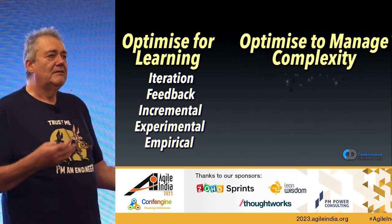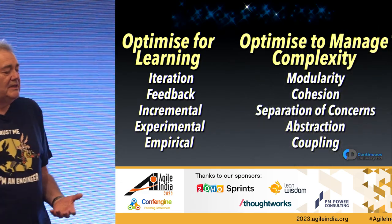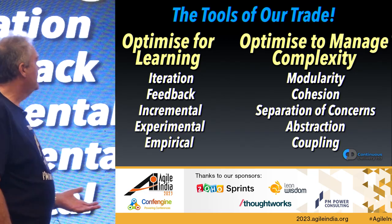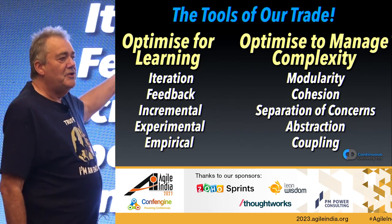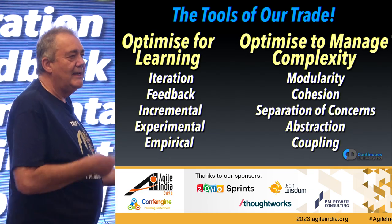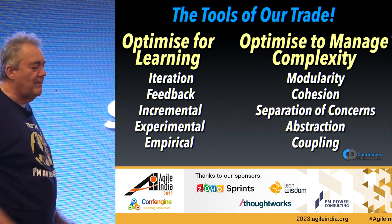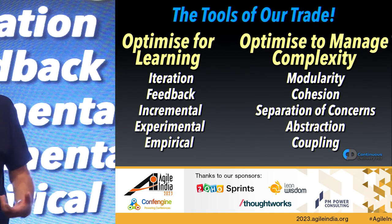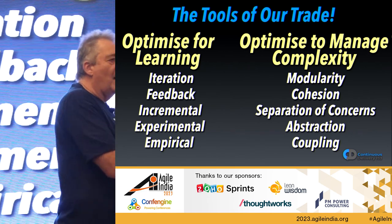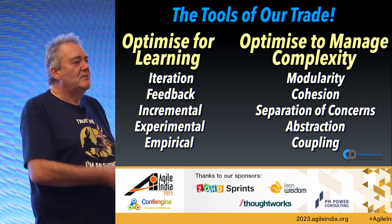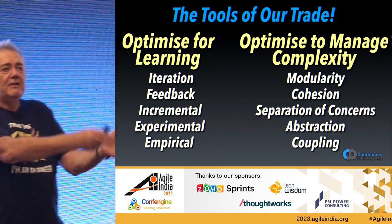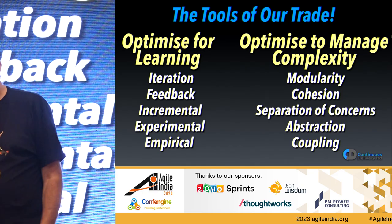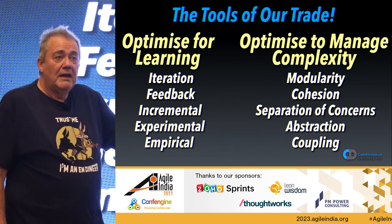I have ten things — five in each category — that will help. For people at an Agile conference, you'll recognize many on the learning side: iteration, feedback, incremental development, evolving systems step by step, working experimentally, learning and inspecting and adapting, being empirical, learning from production. Those are at the heart of real Agility. You can do all of these without big ceremonies — if you're doing them, you're being Agile. If you're doing ceremonies without these things, you're not.